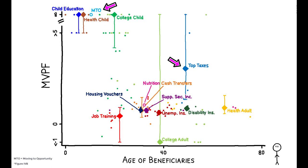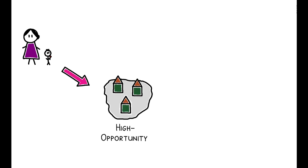For example, policies that enable families to move to high-opportunity neighborhoods increase children's earnings in adulthood, thereby generating large MVPFs. This reinforces a key takeaway of the paper.